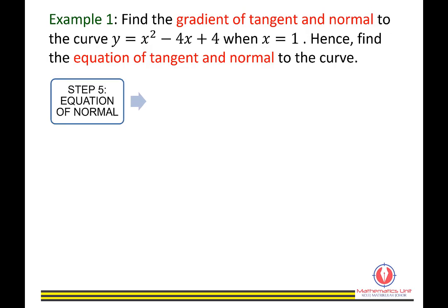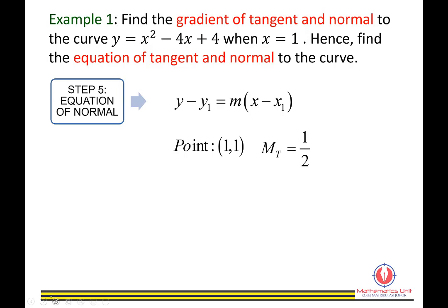For the equation of normal, use the same formula y minus y1 equals m times (x minus x1), with point (1, 1) and gradient of normal equals 1 over 2. Substituting gives y minus 1 equals 1/2 times (x minus 1). Simplifying, you get y equals 1/2 x plus 1/2, which is the equation of normal.